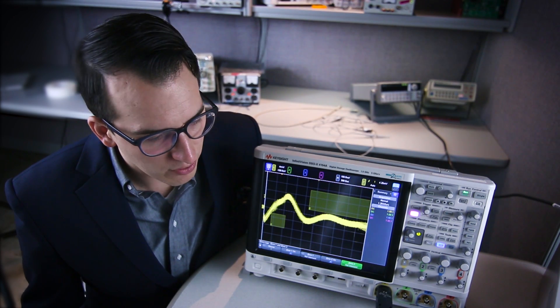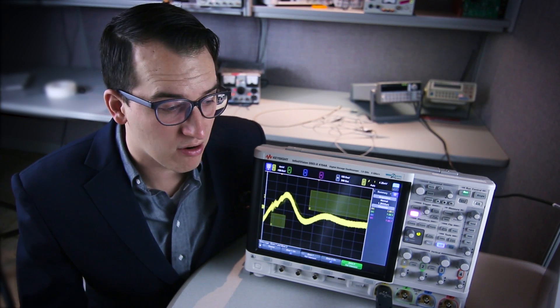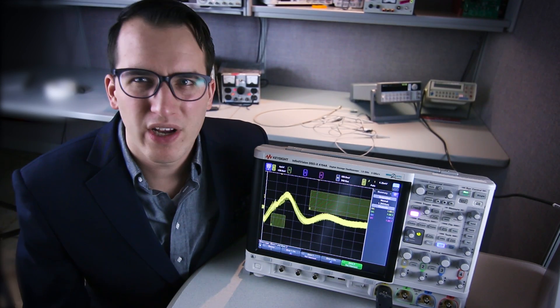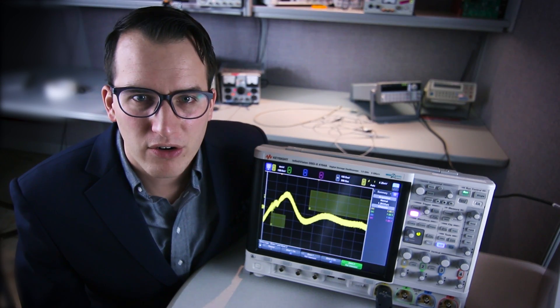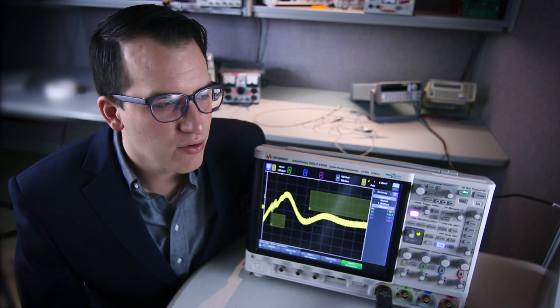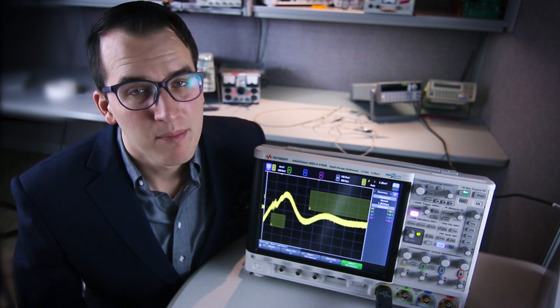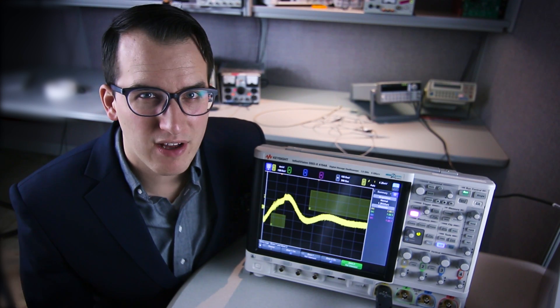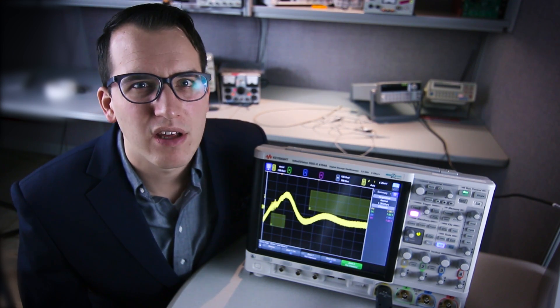Now clamp on current probes are notoriously a bit noisy and fans are also pretty noisy. So if you're trying to, for example, calculate the total current draw or the power measurement, this noisy signal can cause some issues. By changing our acquisition mode we can actually cut some of this noise and get to the heart of what we're seeing in this signal.